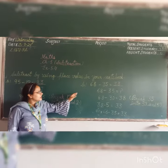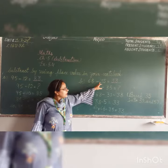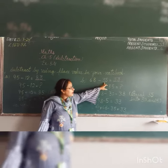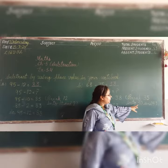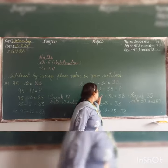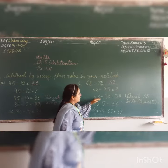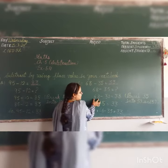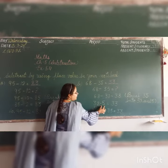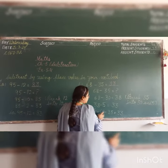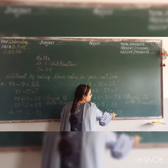Now this is 68 minus 35. So, break 35 — how to break. 35 minus 30 is equal to 38. 68 minus 35 is equal to 33. So the remainder is 33.